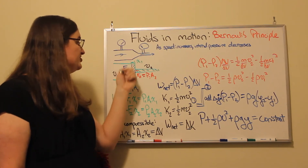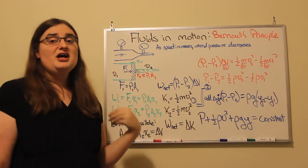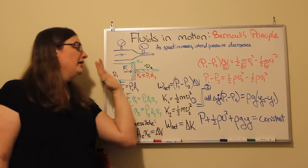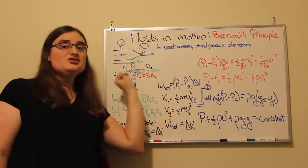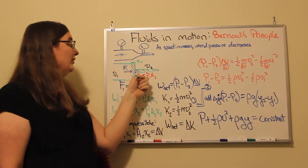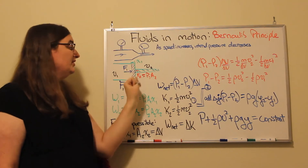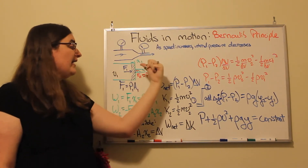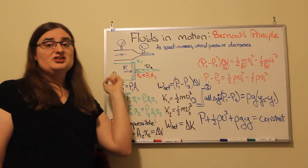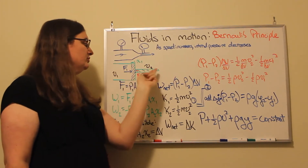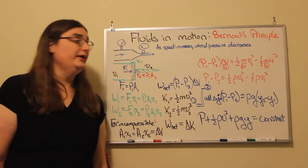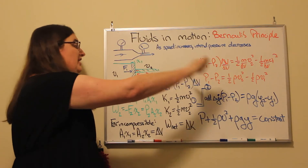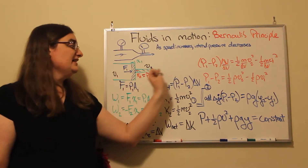The force on side one is the pressure on side one times the cross-sectional area on side one. Now on side two, as this shaded fluid moves into region two, there's a force pushing backwards against that, because there's a pressure of the fluid inside here, and that pressure is going to create a force equal to the pressure on side two times the cross-sectional area. That force is going to push against that fluid along the distance x2.